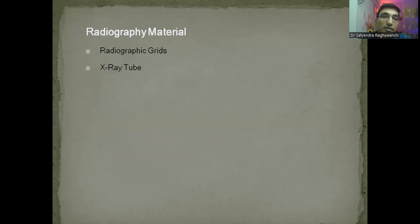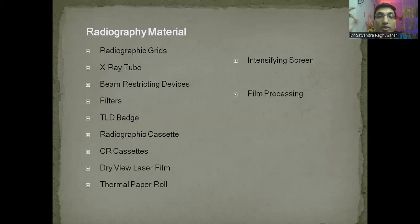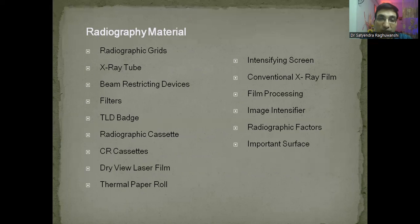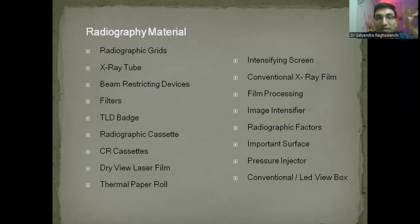In radiography material, we have grids, x-ray tube, beam restricting devices, filters, TLD patch, cassettes, CR cassettes, dry-view film, thermal paper roll, processing, screen, image intensifier, factors, surface landmarks, pressure injectors, and conventional LED view box. The list seems exhaustive, but I can assure you there are not more than 15 to 20 questions on each item. If you remember around 10 to 15 facts about each radiography material, you can get more than 80% marks in the table viva.